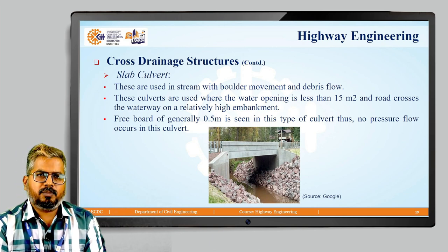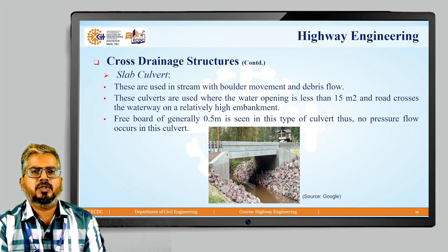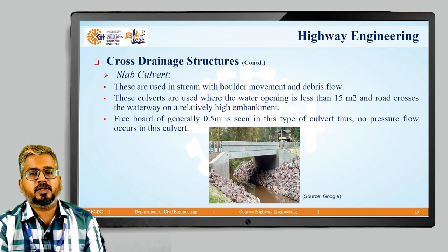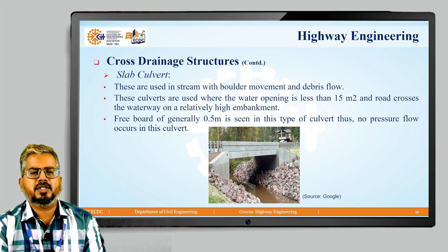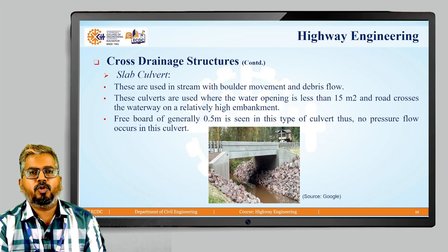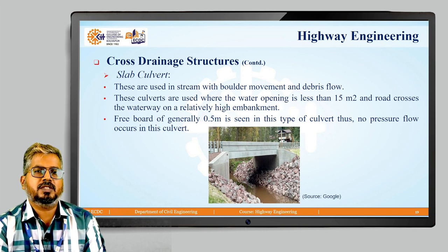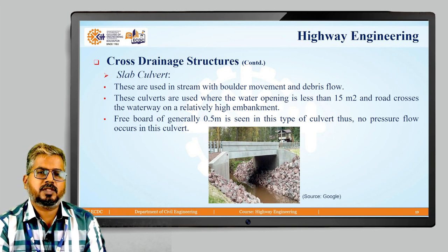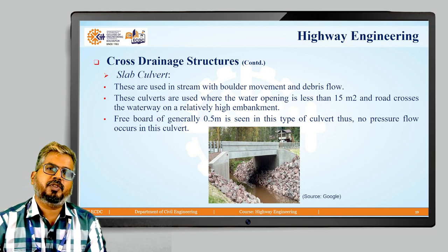The slab culvert is used in streams with boulder movement and debris flow. These culverts are used when the water opening is less than 15 square meters and the road crosses the waterway on a relatively high embankment. A freeboard of generally 0.5 meter is seen in this type of culvert, and thus no pressure flow occurs in this culvert, as can also be seen in the figure.